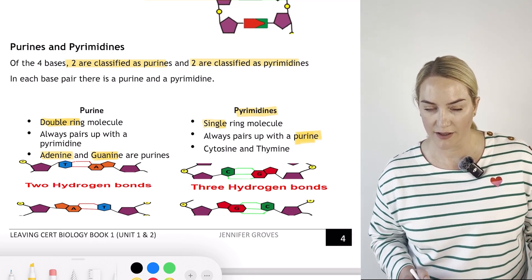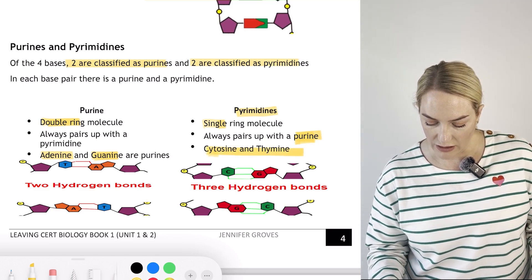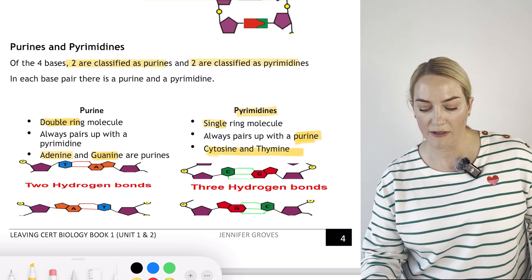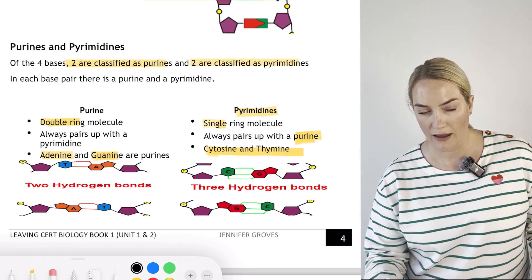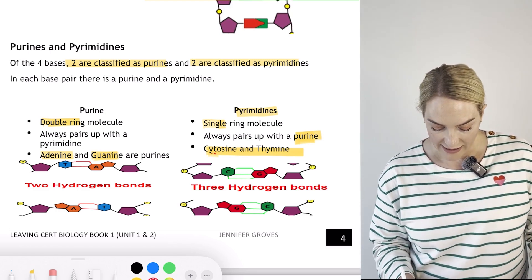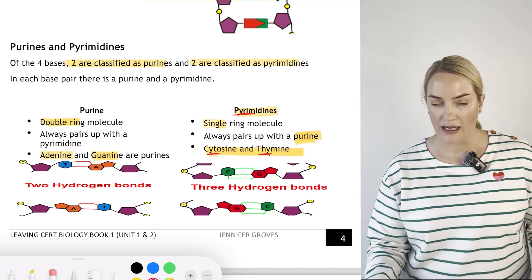How do you remember? Pyrimidine is py or im - cytosine is C-Y, thymine is th-Y. That's how I would try and tell my students how to remember your pyrimidines. If you know your two pyrimidines, then hopefully you should remember your two purines.